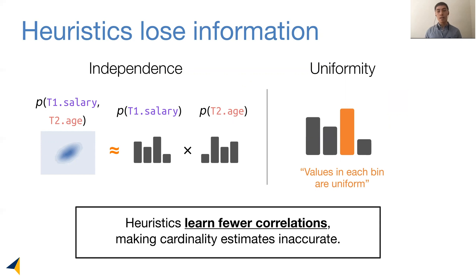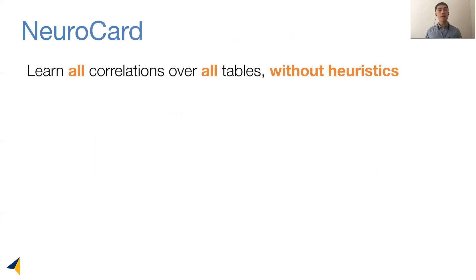We see that heuristic assumptions learn fewer correlations, making our cardinality estimates less accurate. We present a simple idea to address these key challenges: we are going to learn all possible correlations over all the tables in a database, and do so without heuristics.